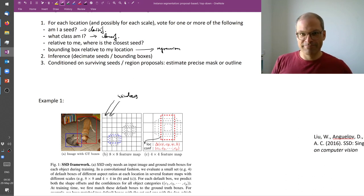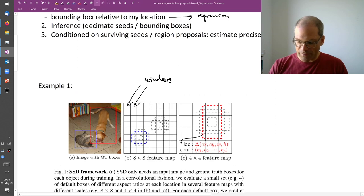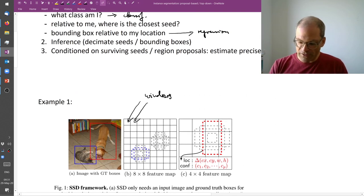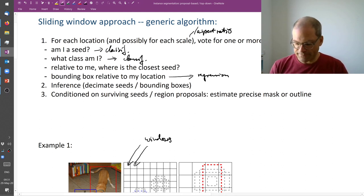Already indicated here are some tricks that you can do. Rather than just use this shape of the window, you can simultaneously do this for several aspect ratios. You can ask these yes or no questions for multiple bounding boxes centered at the same window. You can do this for multiple aspect ratios and potentially for multiple scales.